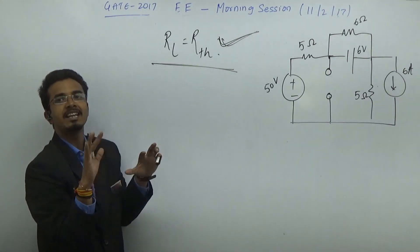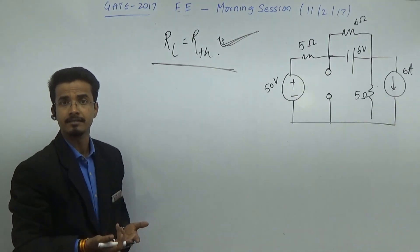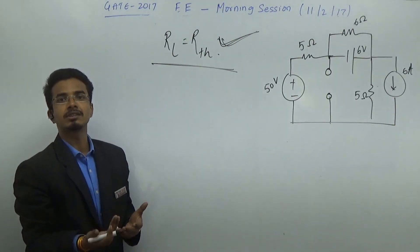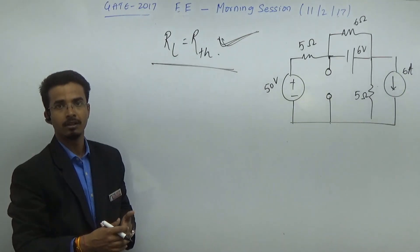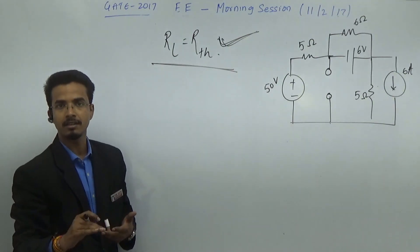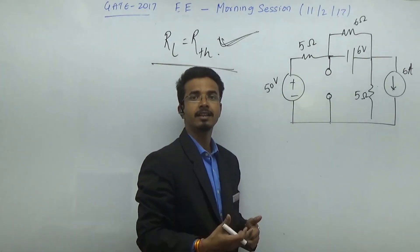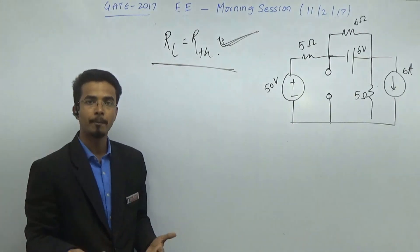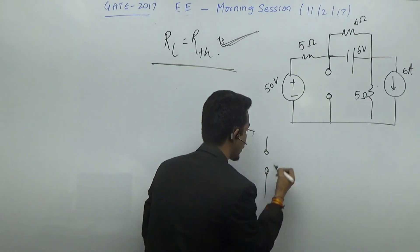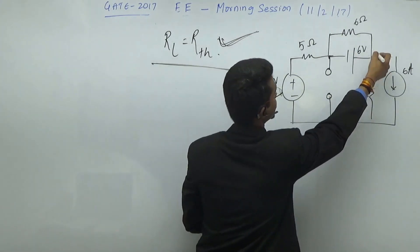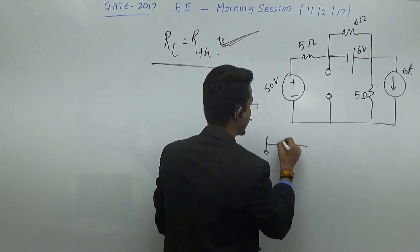Replace all the independent sources by their internal impedances. The voltage source has internal resistance of zero ohm, that means short circuit. So it will get shorted, which means the 6 ohm does not have any meaning.